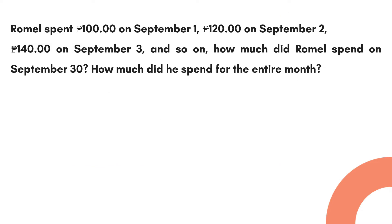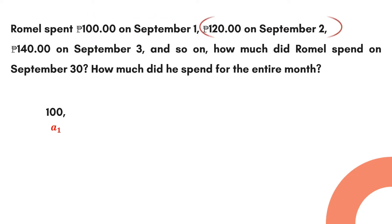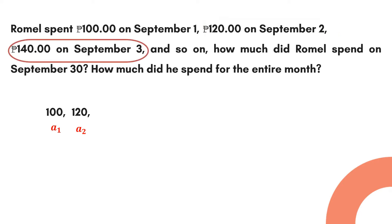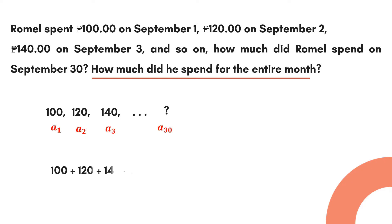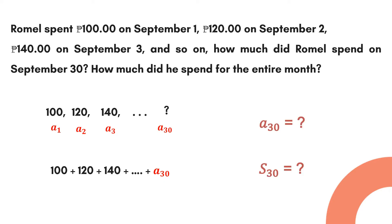Let's write the sequence from the given problem. On September 1 he spent 100 pesos — this will be the first term. On September 2 he spent 120 pesos — this is the second term. On the next day he spent 140, the third term, and we write three dots to indicate that the sequence continues. We need to find the 30th term, and for the second question we add the sequence to get total expenses. So we're solving for a₃₀ and S₃₀.